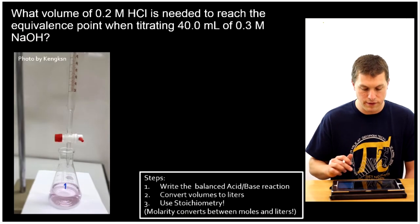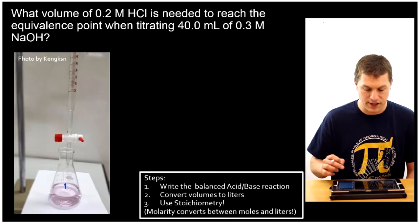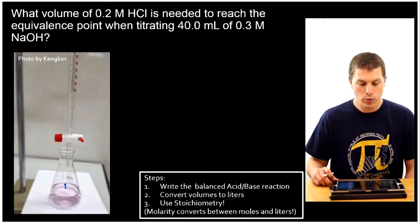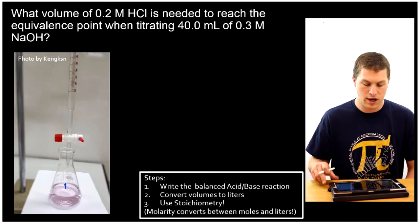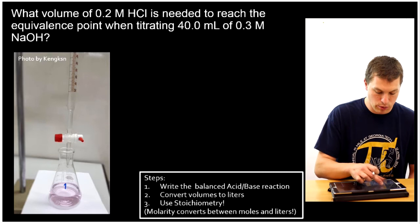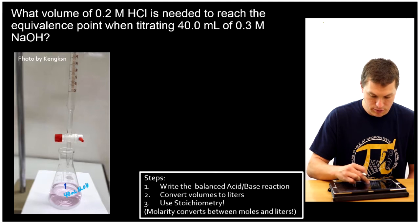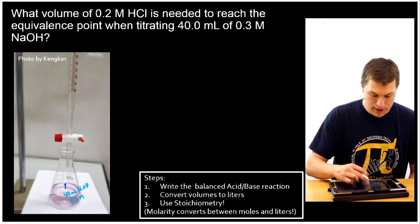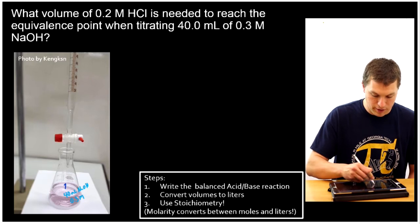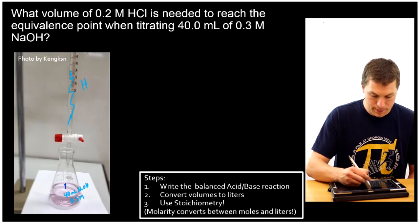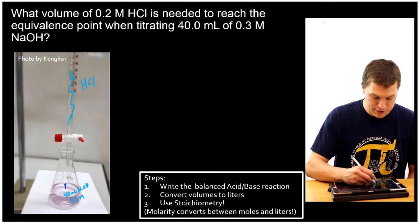Alright? So our first volume of 0.2 molar HCl is needed to reach the equivalence point when titrating 40 milliliters of 0.3 NaOH. So what we have is 40 milliliters of NaOH down here. And we know the concentration. We know that the concentration is 0.3 molar. And then we have some HCl up in our burette. And we know its concentration is 0.2 molar.